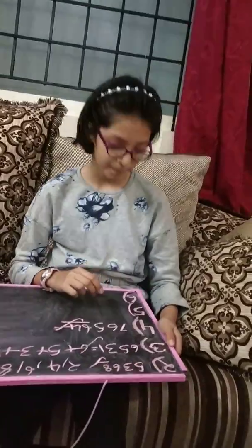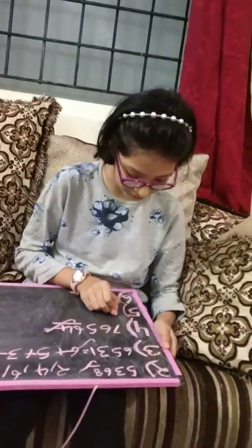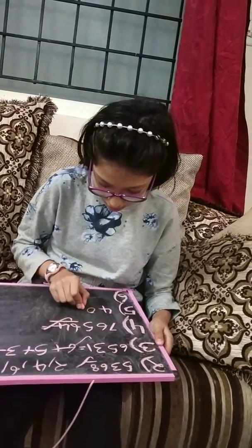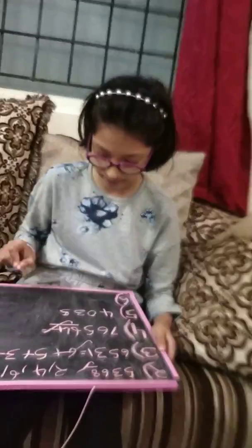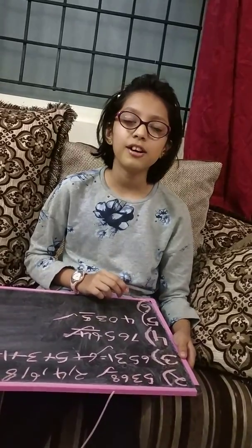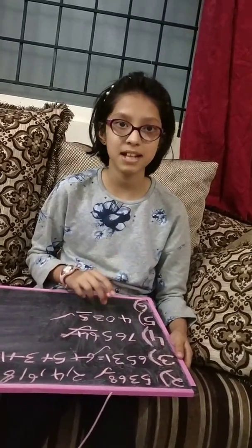Now we do the divisibility of 5. It's very simple and easy. We will take a number, for example 4, 0, 3, 5. The last digit is 5, and 5 is divisible by 5. If 0 or 5 are in the unit's place, then the number is divisible by 5. For example, if the last digit is 4, it will not be divisible by 5.